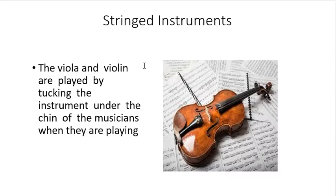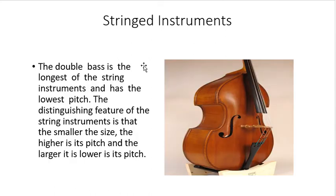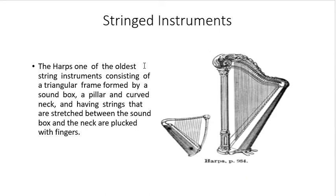We also have the viola. Both the violin and viola are played by tucking the instrument under the chin of the musician while playing. The next one is the double bass. The double bass is the longest of the string instruments and has the lowest pitch. The distinguishing feature of string instruments is that the smaller the size, the higher the pitch, and the larger it is, the lower its pitch.